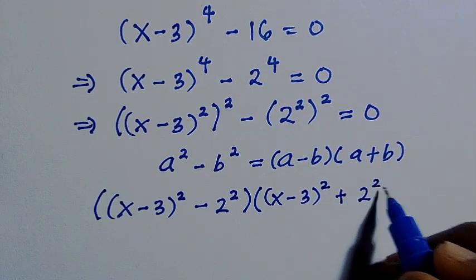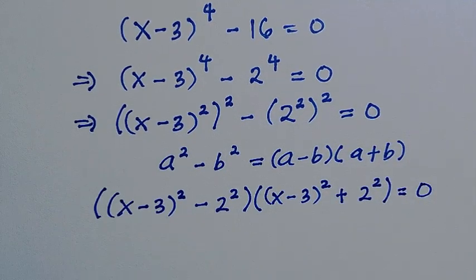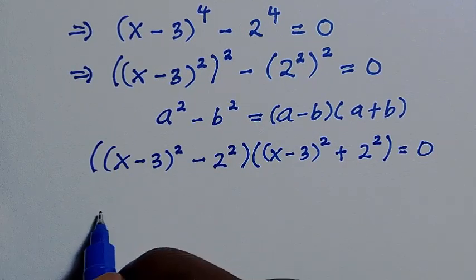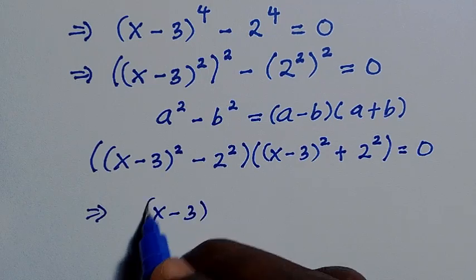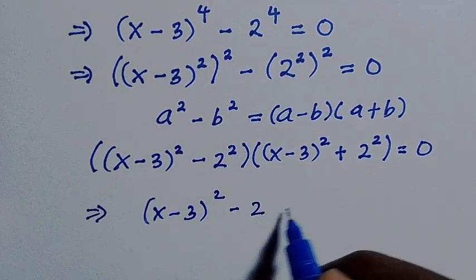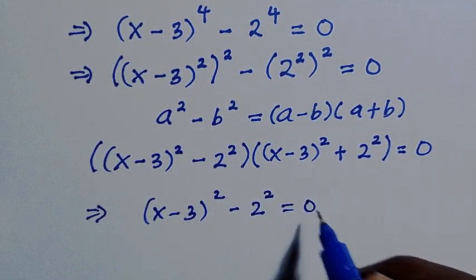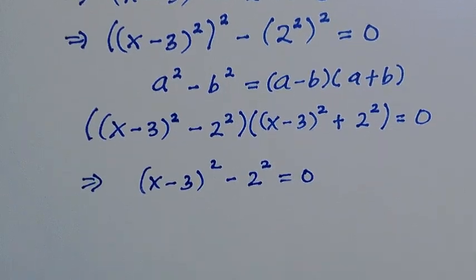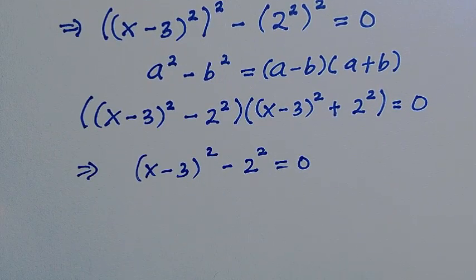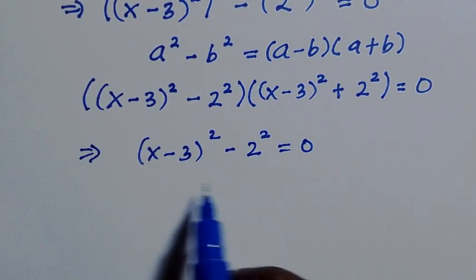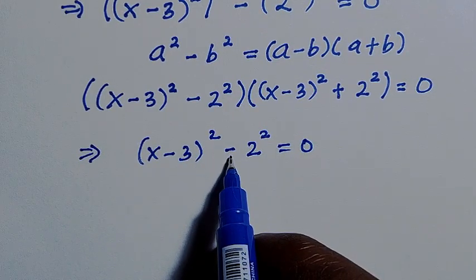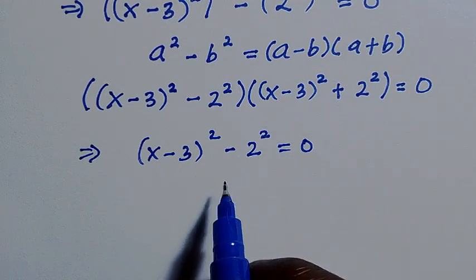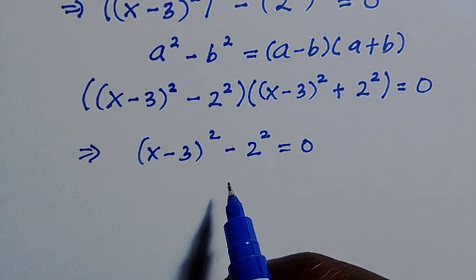Using the difference of two squares identity, we factor this expression and set each factor equal to 0. For the first case, we let (x minus 3) squared minus 2 squared equals 0. This is again a difference of two squares, so we apply that identity a second time.